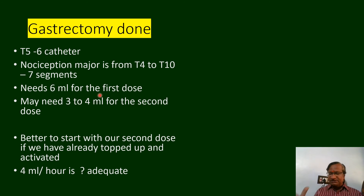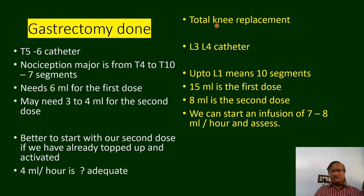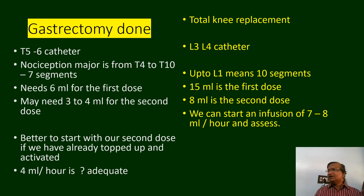3 ml top-up of 0.25% is enough for a thoracic catheter, but the same surgery done with an L3-L4 catheter is totally different. For total knee replacement, nociception is at L2-L3, so L1 level is needed — 10 segments. 15 ml may be the first dose at 1 to 1.5 ml per segment; thereafter we can reduce. I use approximately 6 ml per hour epidural infusion followed by ketorolac. Currently I prefer a saphenous nerve catheter with a single-shot spinal for TKR.